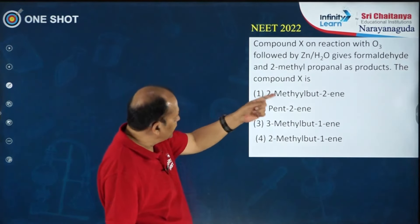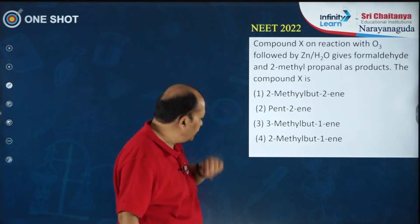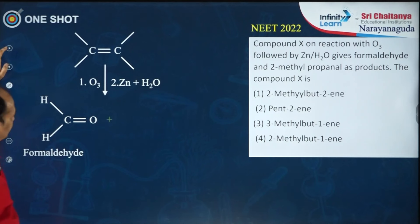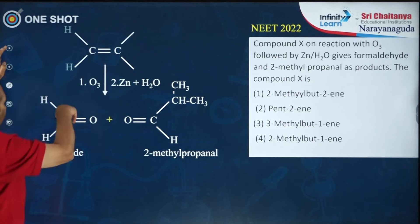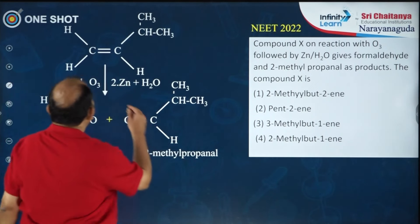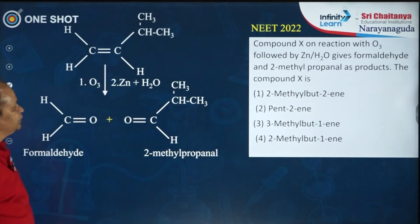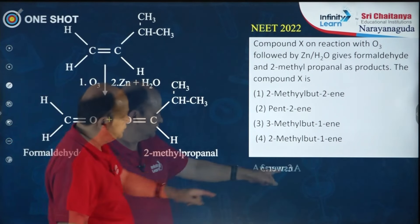The alkene X is treated with ozone followed by hydrolysis to give formaldehyde and 2-methylpropanal. That means on one carbon you put two hydrogens (to form formaldehyde) and on the other you put a hydrogen and an isobutyl substrate. Counting: 1, 2, 3, 4 — this is 3-methyl-but-1-ene. The third option is the right answer.